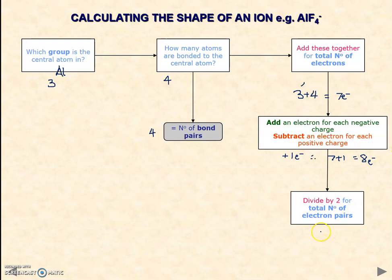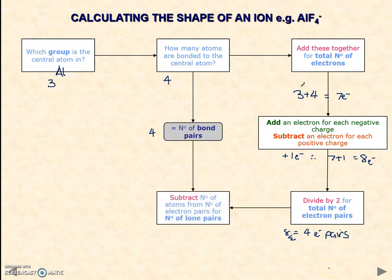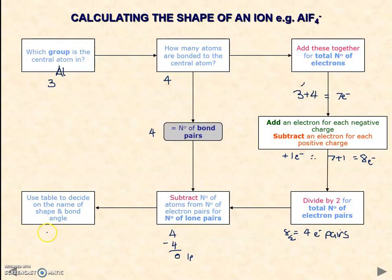So now when we divide by two to get our total number of electron pairs, we now have an integer of four electron pairs. Eight divided by two equals four electron pairs. If we do the same as previously, subtract the number of atoms from the total number of electron pairs, the total number of electron pairs is four, the number of bond pairs is four, so that means we've got zero lone pairs. In this example, it just so happens that we have four bond pairs, zero lone pairs. So this is a tetrahedral shape.